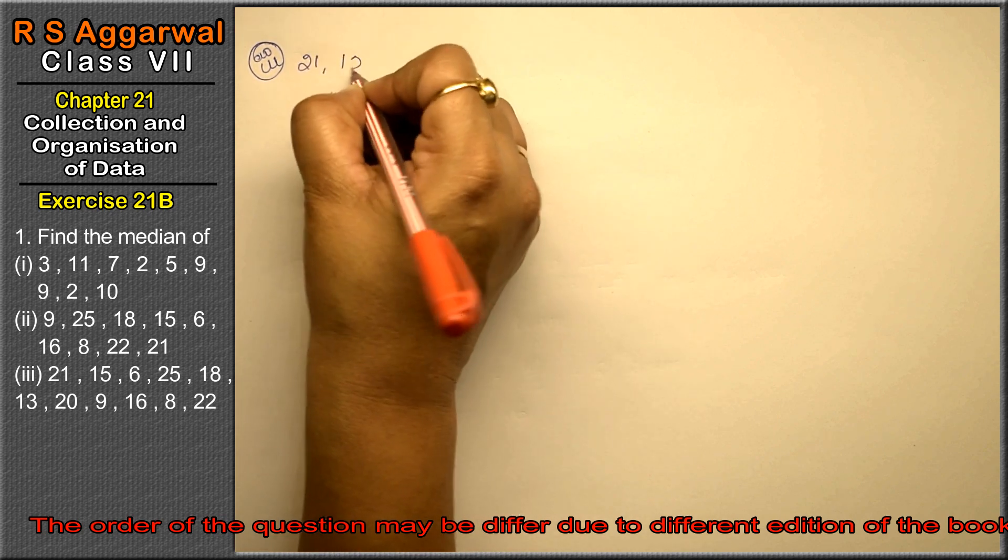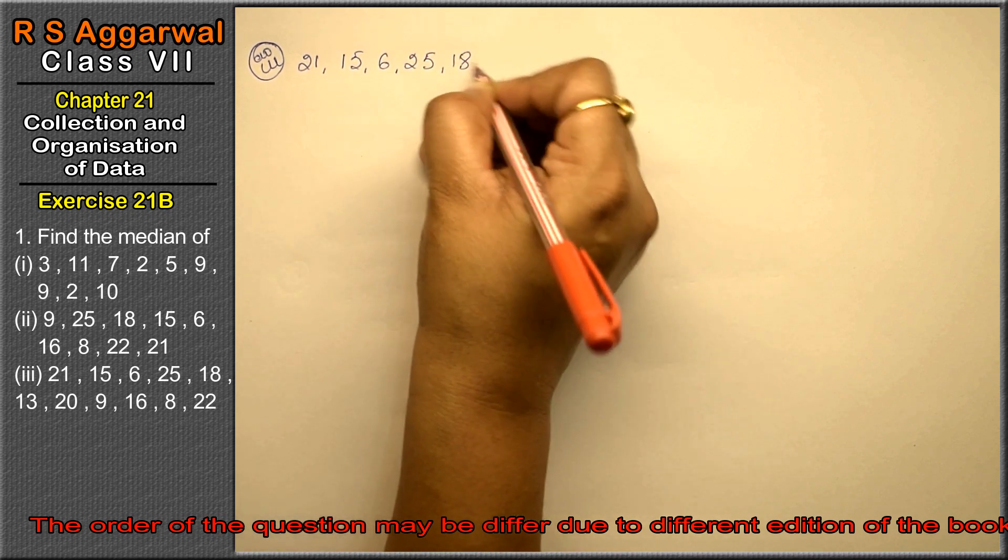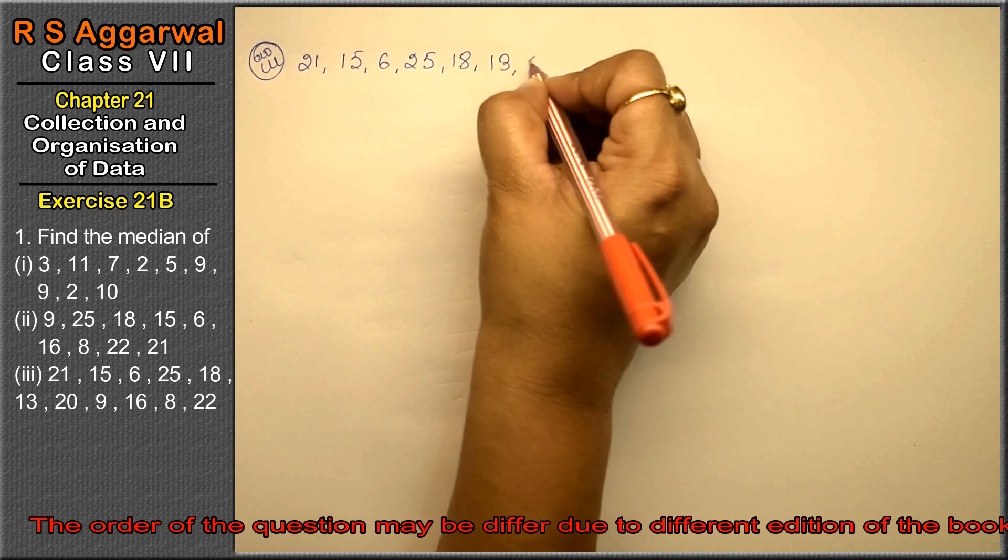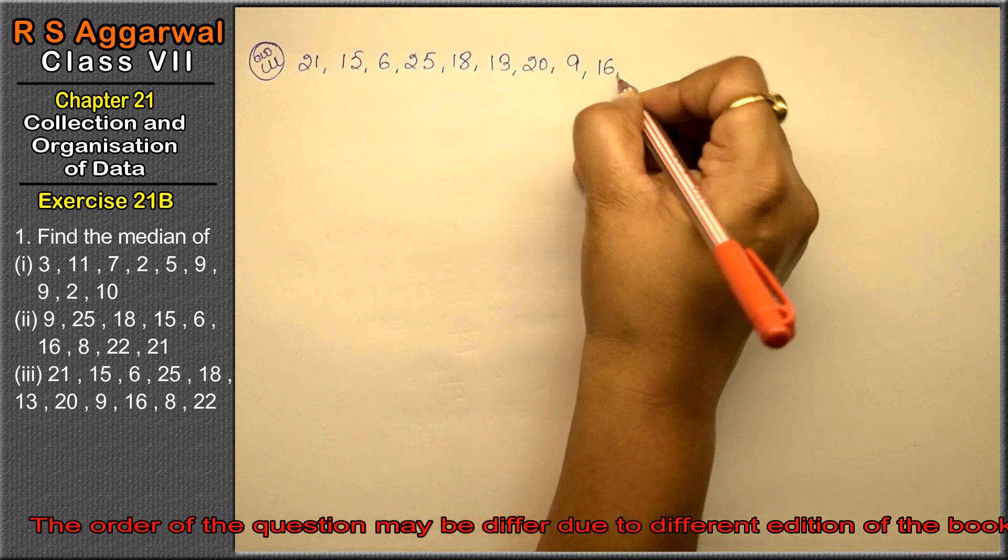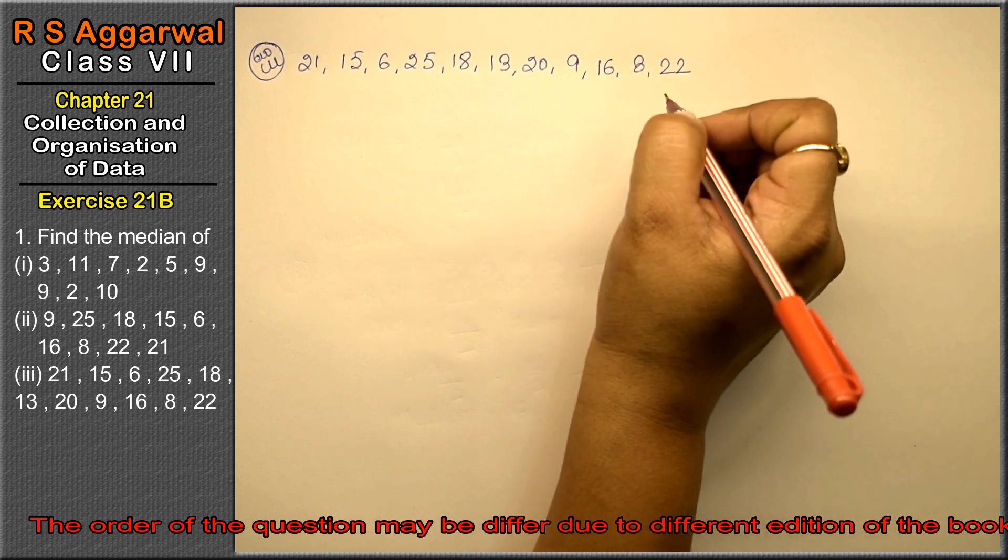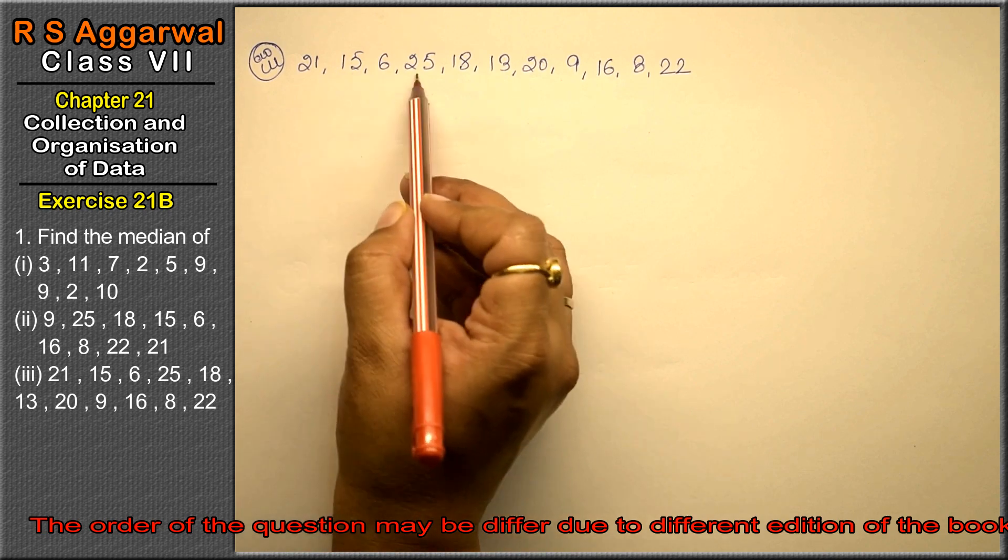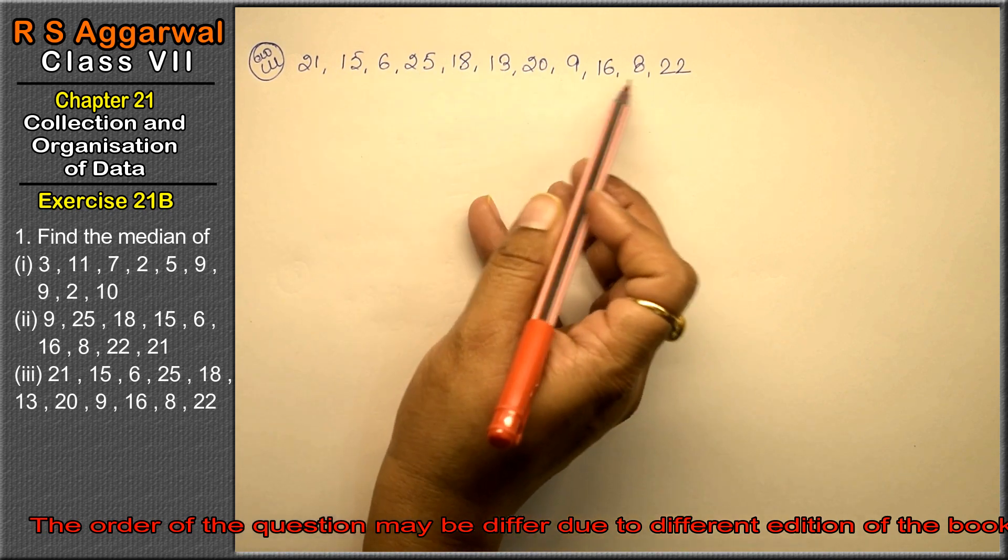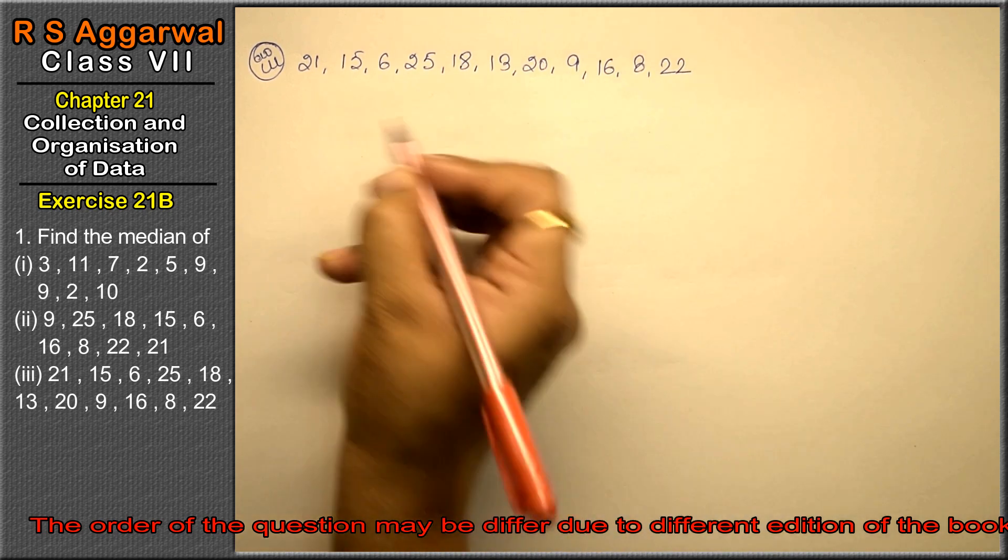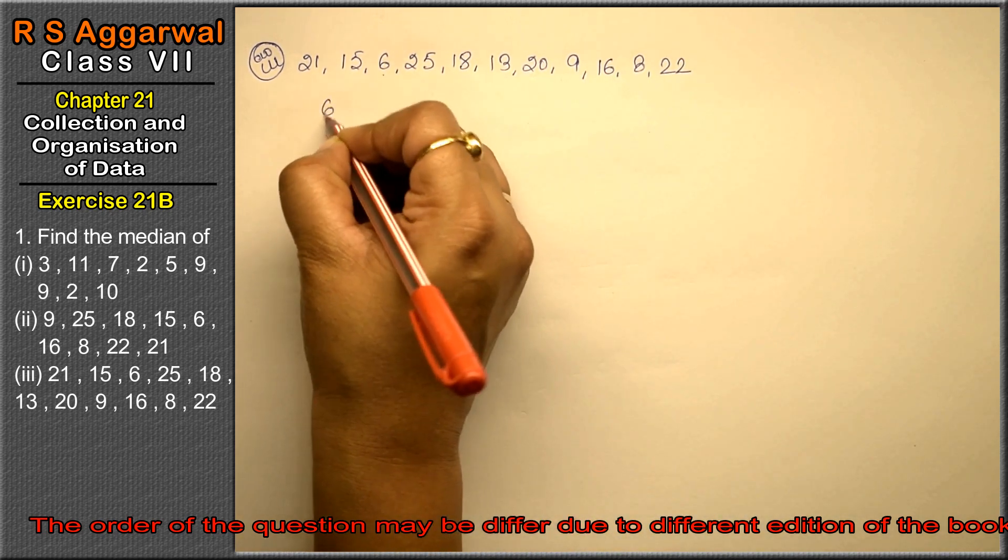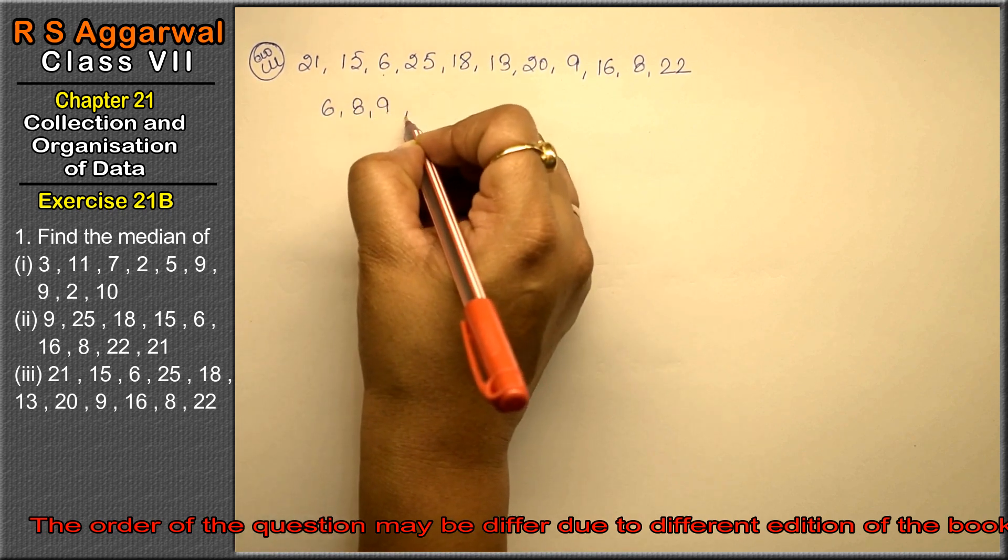Let's do third part. Numbers: 21, 15, 6, 25, 18, 13, 20, 9, 16, 8, and 22. First count the numbers: 1, 2, 3, 4, 5, 6, 7, 8, 9, 10, 11 numbers. In ascending order: